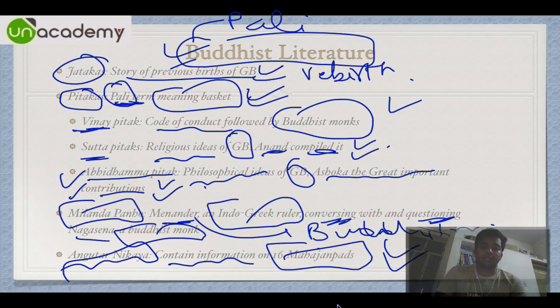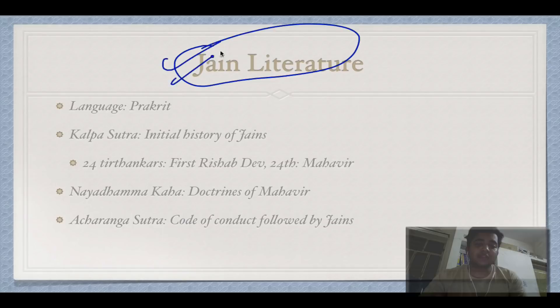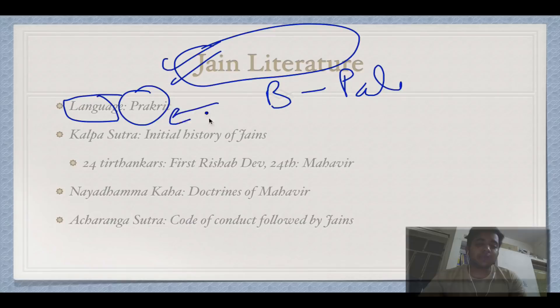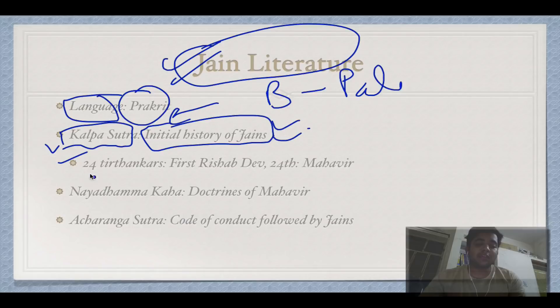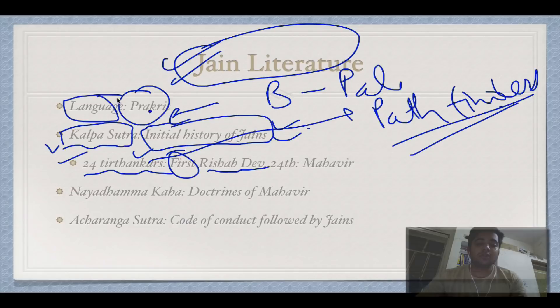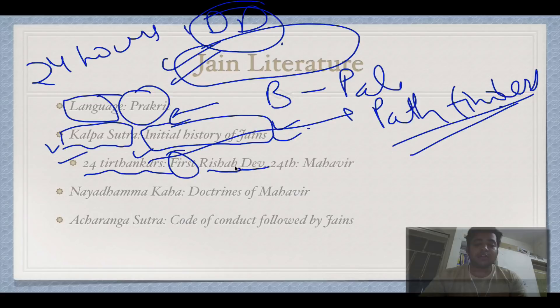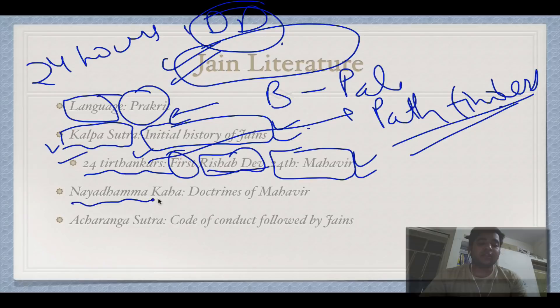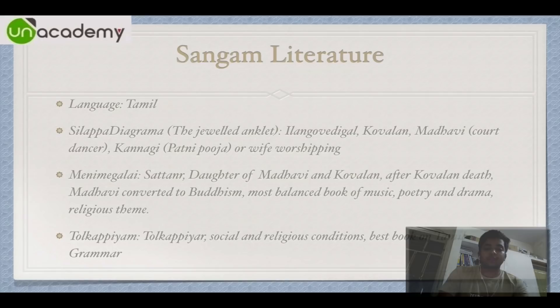For Jain literature, the language is Prakrit, as opposed to Pali for Buddhist texts. The Kalpa Sutra is the first Jain book and deals with the initial history of Jainism, including the 24 Tirthankars — 'Tirthankar' literally means pathfinders. Rishabhadev was the first Tirthankar and Mahavira was the 24th. Naya Dhamma Kaha includes the doctrines of Mahavira. Acharanga Sutra is the code of conduct followed by Jains, similar to the Vinaya Pitaka for Buddhists.